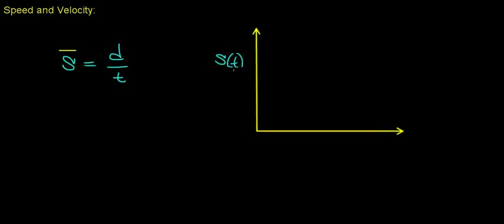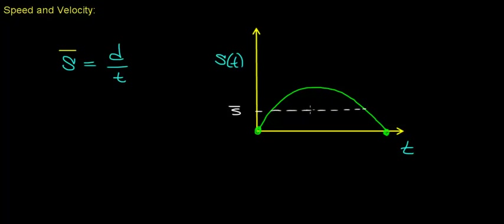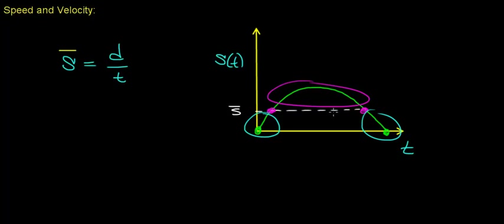As an example, suppose we graph the speed of an object as a function of time. Most objects start out from rest — that is, from an initial speed of zero — increase over some interval of time, and then decrease back to zero. Over this interval, the average speed is the total distance divided by total time. There are only two periods of time where the speed actually equals this calculated average; at other times the speed is either less than or greater than the average value.